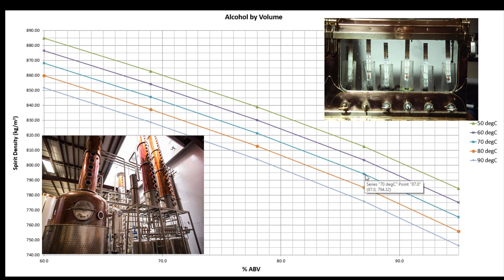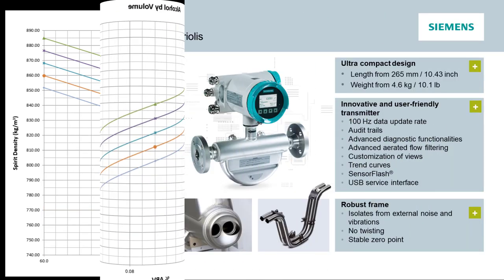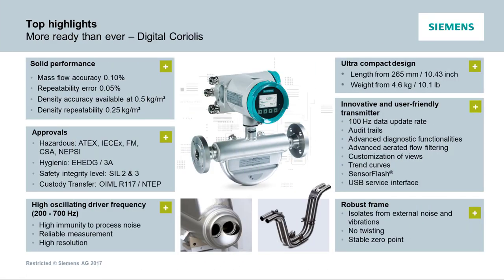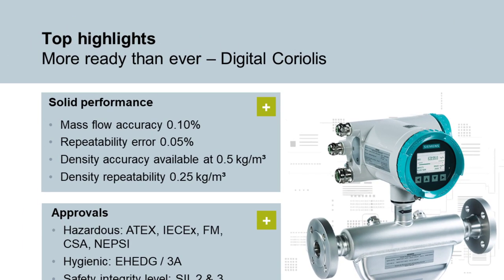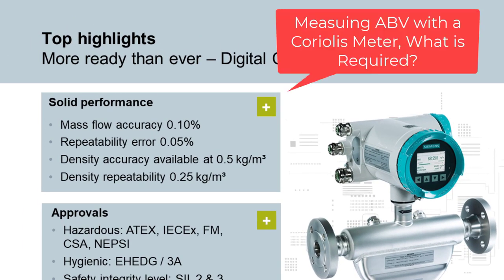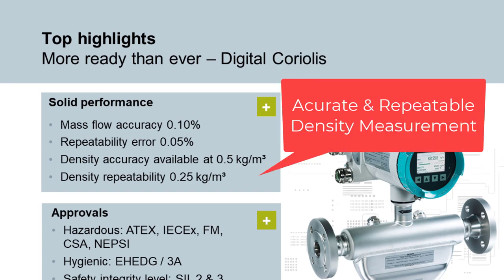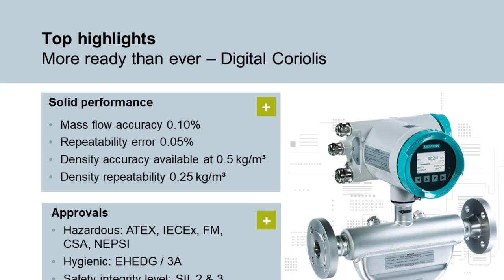What do we need to make the measurements for distilling? First, we need a meter that can measure density. A coriolis meter can be very accurate measuring density — they're normally density calibrated by running water through at different temperatures. That gives us an accuracy for the Siemens meter of 0.5 kilograms per meter cubed, but with a repeatability at a much higher factor than that.